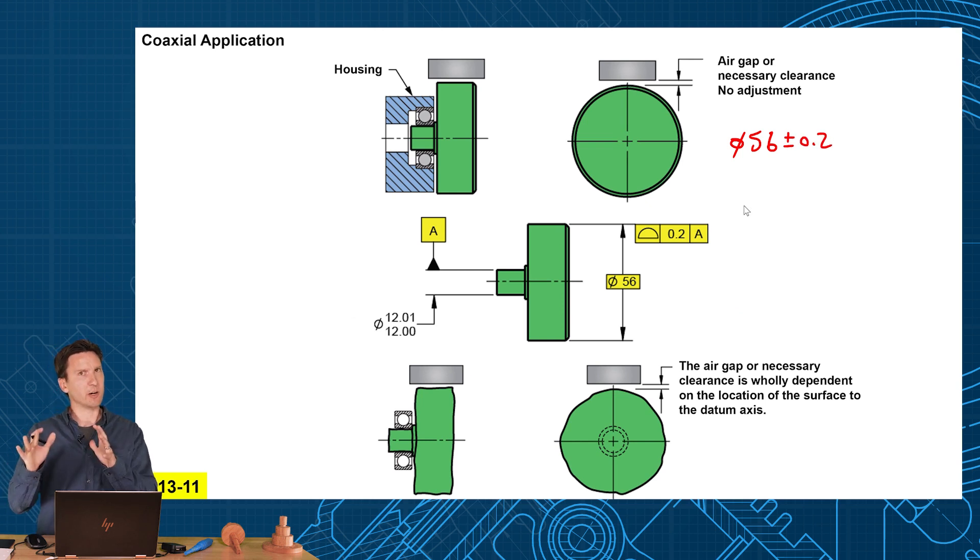Now I want to show the alternative. How could we do this with runout? Because we could do this with runout also. So if we do it with runout, we'll say diameter 56, we'll do total runout relative to A. Now remember, when we use runout, what do we always have to do to the size? Tolerance it, give it a plus or minus. So now how much plus or minus do we give the size and how much runout do we give it? People say, well, just put plus or minus 0.2 on there to match the other one.